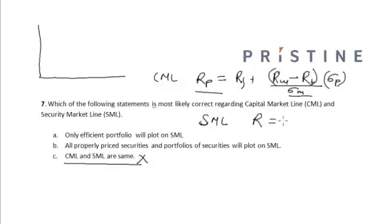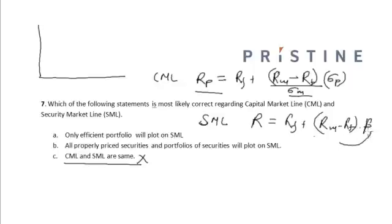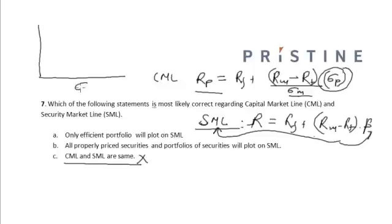Whereas the SML, or the Security Market Line, gives us that the required return of an asset is equal to the risk-free rate plus the market risk premium — that is, RM minus RF — multiplied by beta, where beta reflects the systematic risk of that asset. Hence, CML and SML are different: CML uses standard deviation of the portfolio on the x-axis, whereas SML uses beta on the x-axis.